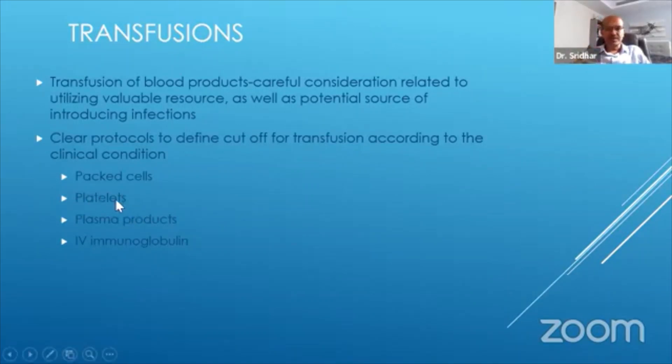There is no real need to give fresh frozen plasma as a volume replacement in most situations. As a correction of coagulopathy, you may consider that. IV immunoglobulin for preventing sepsis has no role, and for jaundice as well, you only use it to tide over the risk of exchange transfusion.